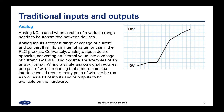Wiring a single analog signal requires one pair of wires, meaning that a more complex interface would require many pairs of wires to be run, as well as a lot of inputs or outputs to be available on the hardware.